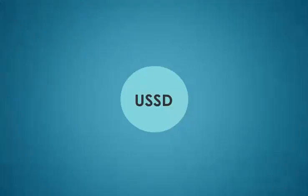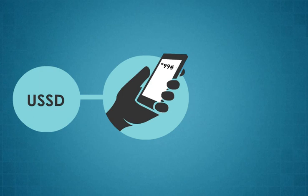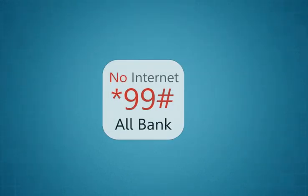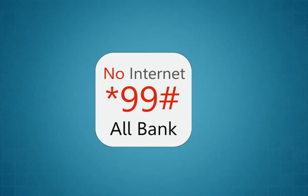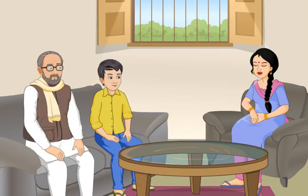USSD stands for Unstructured Supplementary Service Data. This service allows every customer to access banking services with a single number offered through a national unified USSD platform (NUUP) on a short code *99#. It can be used for payments up to Rs. 5,000 per day. *99# is a USSD-based mobile banking service from NPCI that brings together banks and telecom service providers. By dialing *99# from the registered mobile number, a customer can access all financial services. This service works across all GSM service providers and handsets.